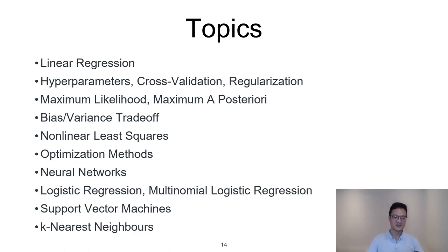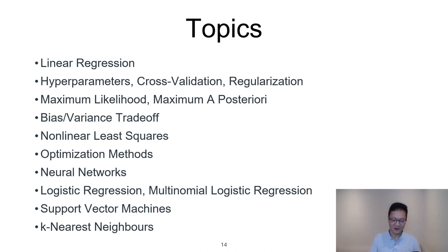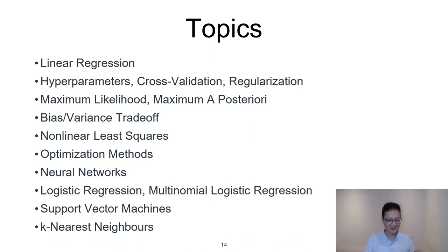The topics we're going to cover include: linear regression, general principles of machine learning such as hyperparameters, cross-validation, and regularization. After that, maximum likelihood and maximum a posteriori, as well as the bias-variance trade-off. Then nonlinear least squares and optimization methods, neural networks with all the math behind them, logistic regression, and multinomial logistic regression for classification. Towards the end we'll cover support vector machines and k-nearest neighbors if time allows.